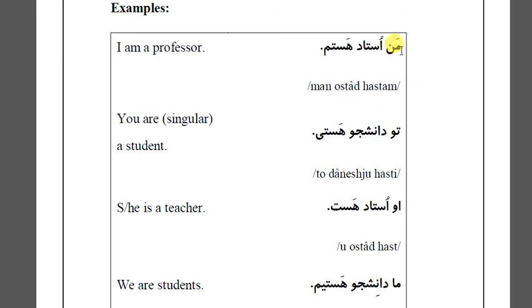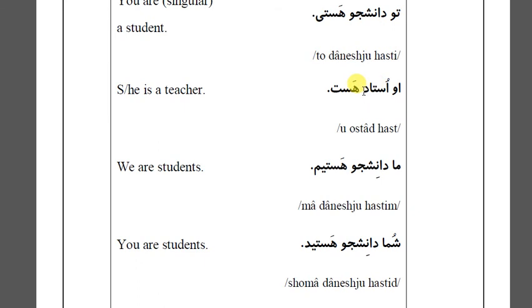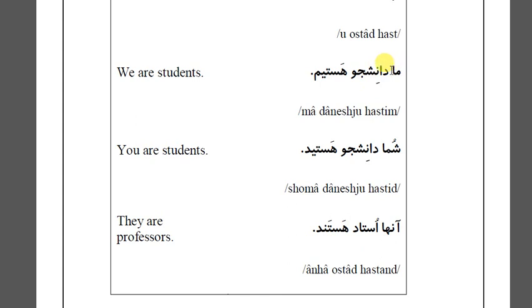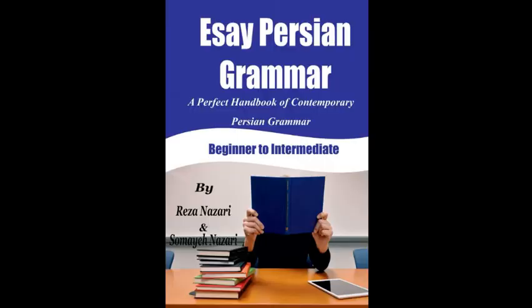Now here we have some examples. Man daneshju hastam. To daneshju hasti. U daneshju hast — or you could say ast. Ma daneshju hastim. Shoma daneshju hastid. On-ha daneshju hastand.